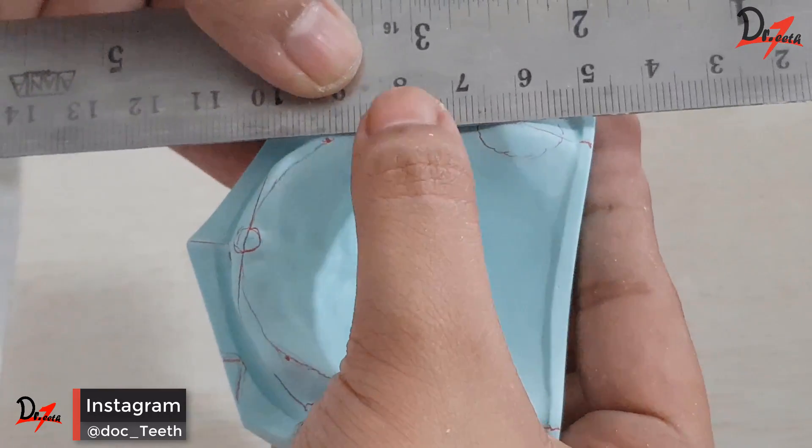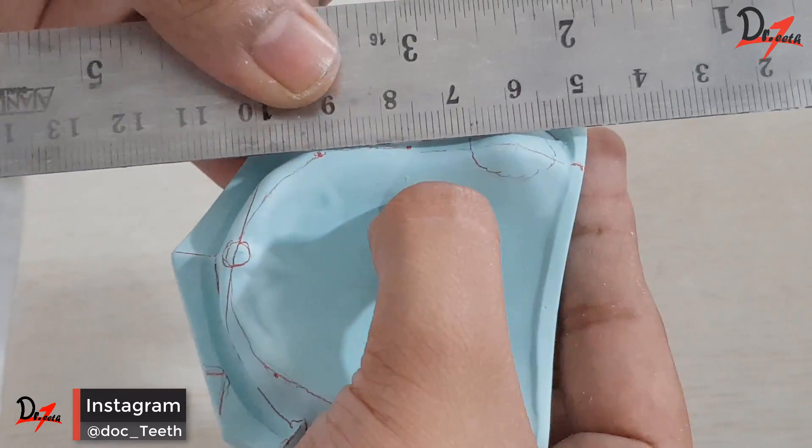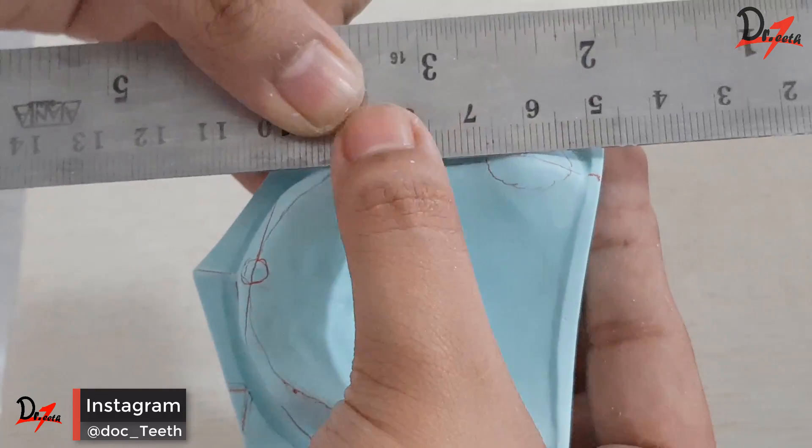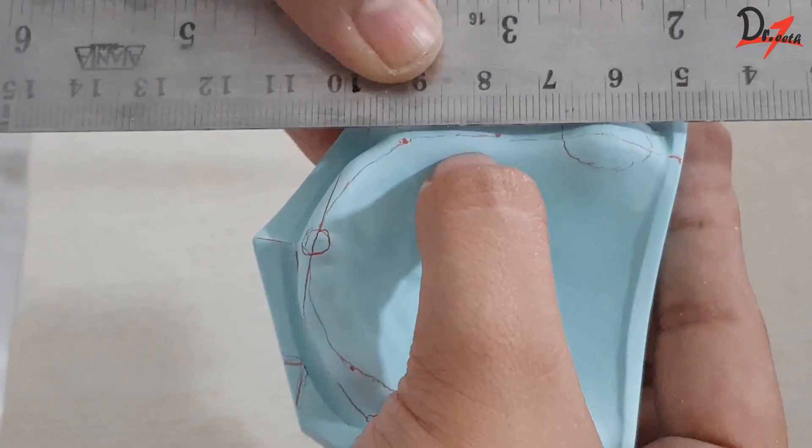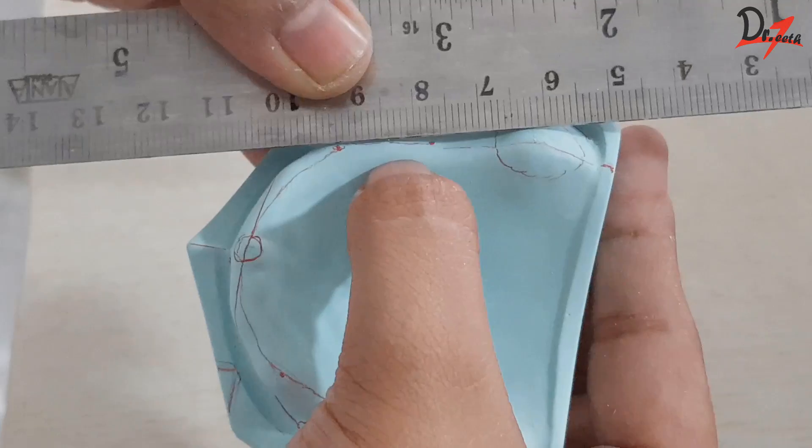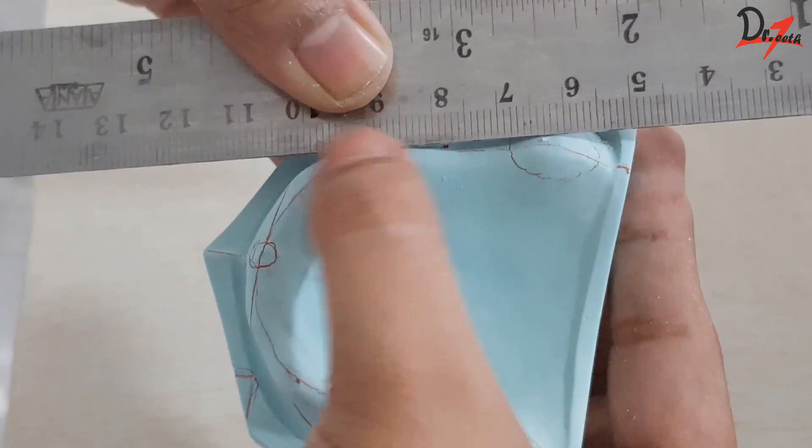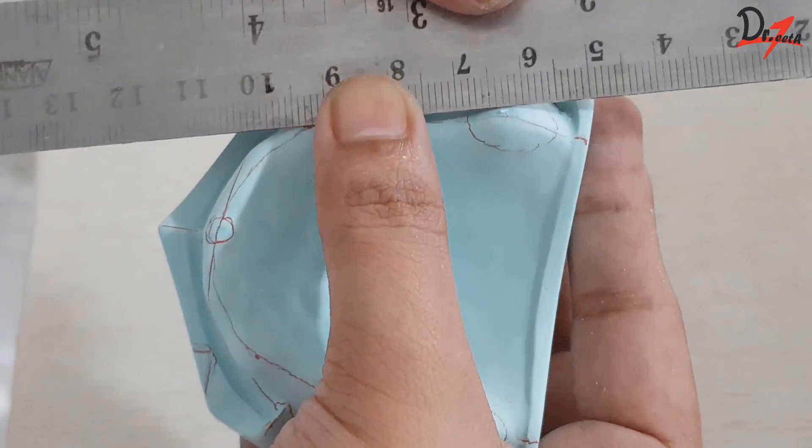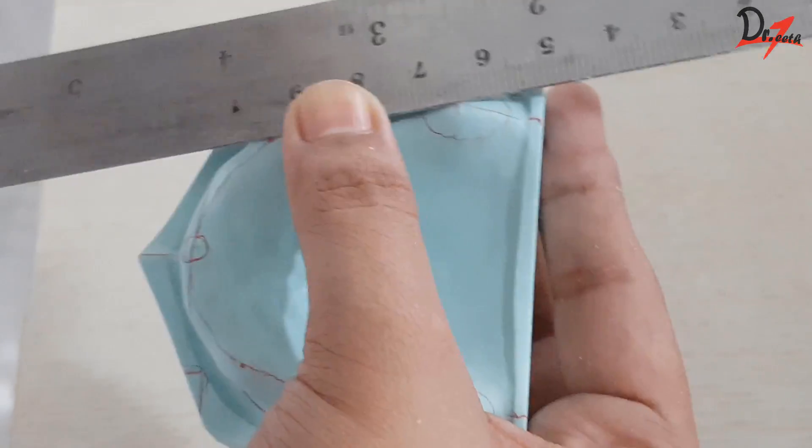So as you can see, I am trying to extend the line on the anterior land area of the cast. So now we are done with the cheat lines that will help us while making rims, while teeth setting and even while mounting. So I hope you found this video helpful.